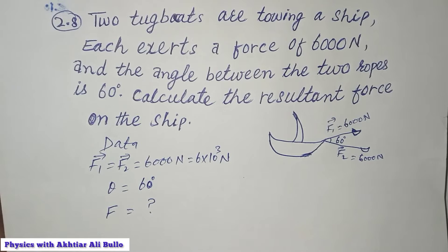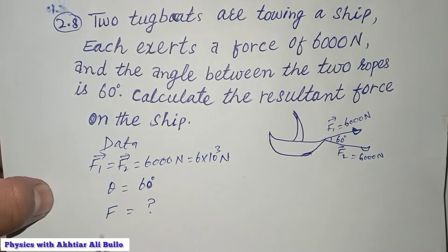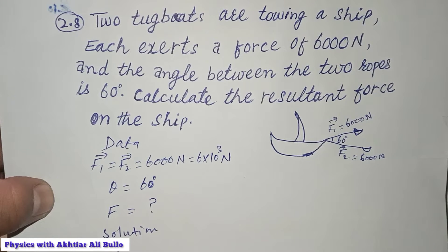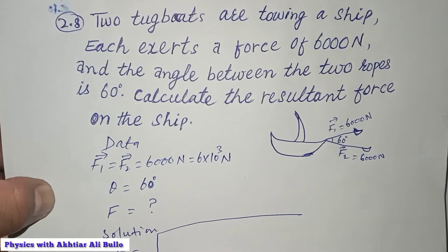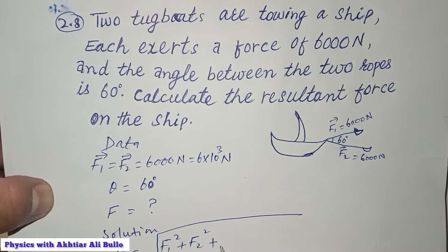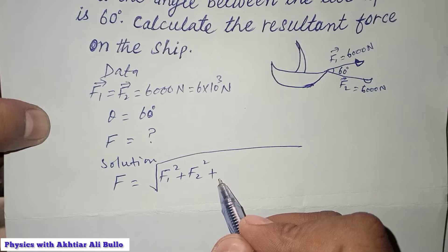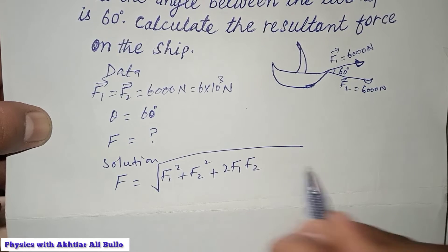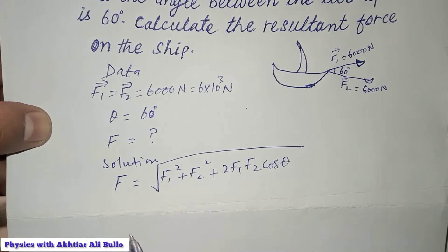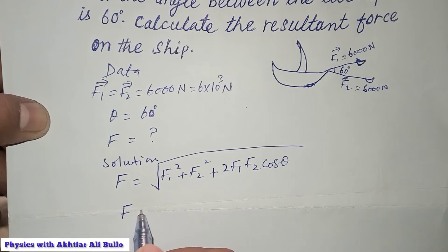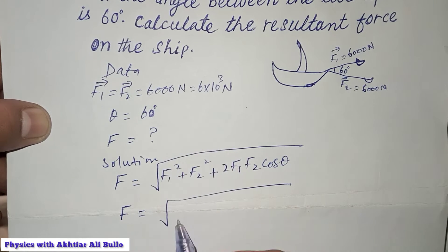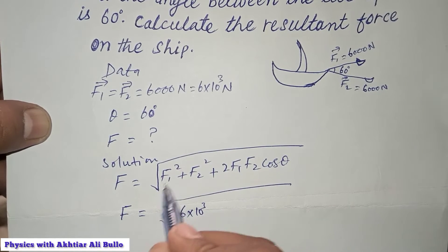To calculate the resultant force, we use the formula: F equals the square root of F1² plus F2² plus 2·F1·F2·cos(θ). Now putting in the values: F1 is 6 × 10³, so we compute (6 × 10³)² plus (6 × 10³)² plus 2·F1·F2·cos(60°).